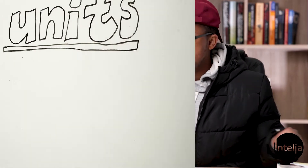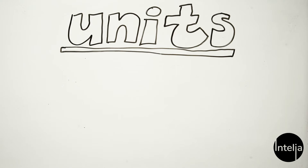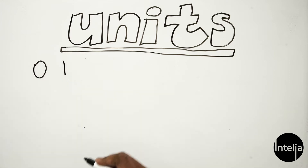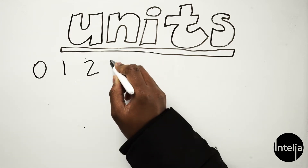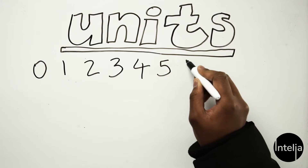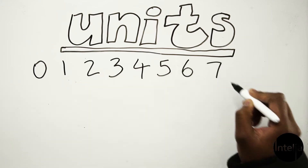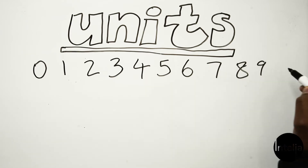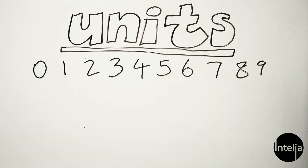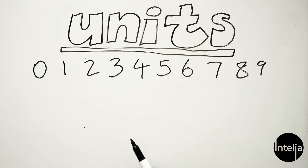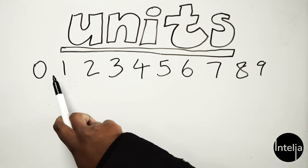So let's start with units. Units are numbers that go by themselves, like zero, one, two, three, four, five, six, seven, eight, nine — and that's it. All of these are numbers that stand by themselves. They don't have a number before or after them.